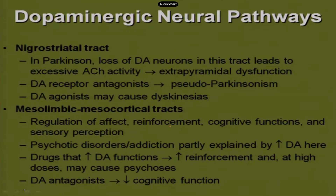If you have a thorough understanding of the next couple of slides, you'll be able to understand what agonists are supposed to do and what blockers are expected to do in the case of dopamine. For the nigrostriatal pathway, the cell bodies are in the substantia nigra — specifically in the midbrain, in the pars compacta. Their output is in the striatum. Loss of dopaminergic neurons and the resulting imbalance with acetylcholine — that is, excessive acetylcholine activity — leads to extrapyramidal dysfunction.